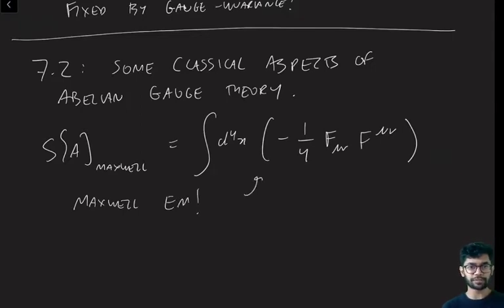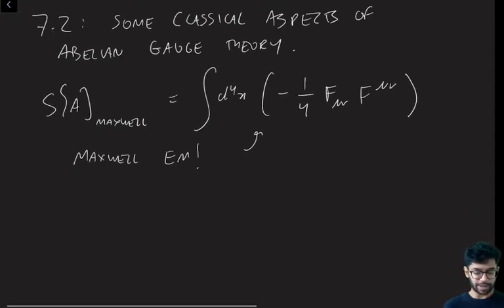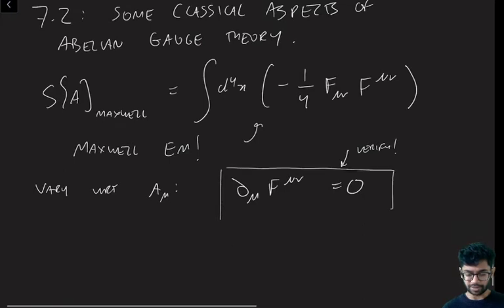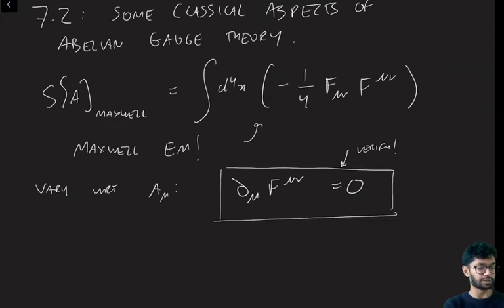So first, let's figure out the classical equations of motion. If you vary this with respect to A, then you find that the equations of motion are just d_mu F^mu_nu equals zero. Everyone should verify this, so check that you can derive this. This is a good check of your action varying abilities. These equations of motion are really very nice and very simple. This contains the full content of the regular Maxwell's equations, if you also include the constraints coming from the fact that F is the anti-symmetric derivative of A.